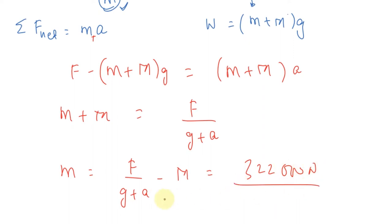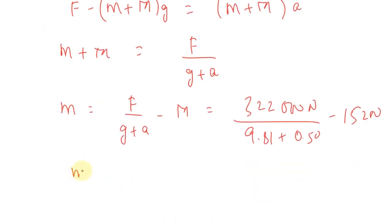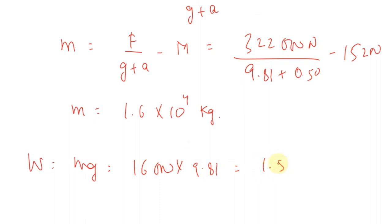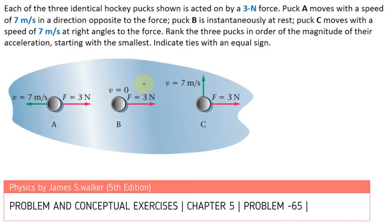Substituting: 322,000 Newton divided by (9.81 + 0.50) minus 15,200 kg gives the cargo mass as approximately 1.6 × 10⁴ kg. The weight force of the cargo is W = mg = 16,000 × 9.81 = 1.57 × 10⁵ Newton. So the cargo exerts an upward force of 1.57 × 10⁵ Newton on the Earth.